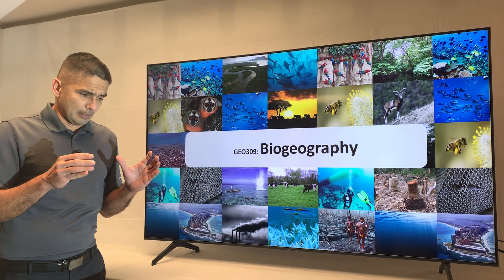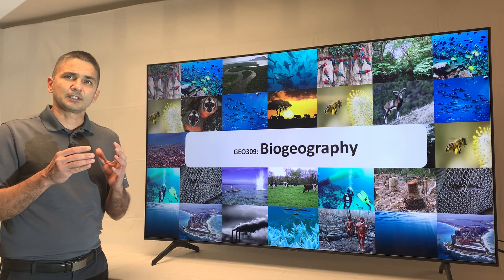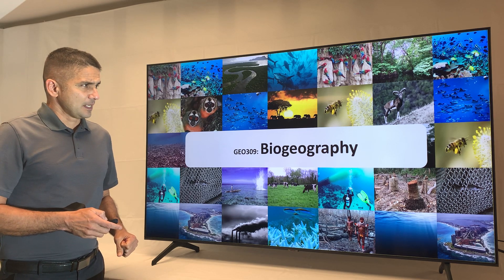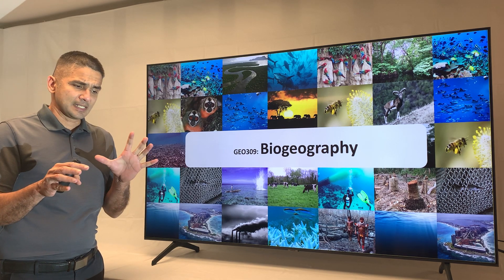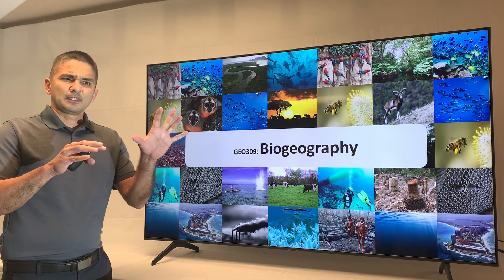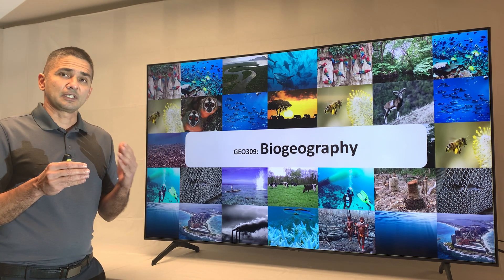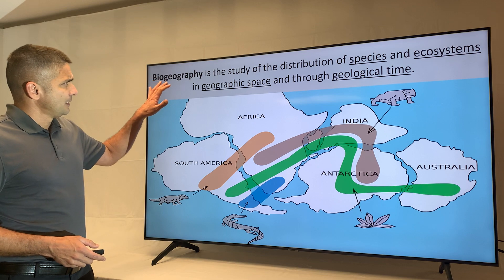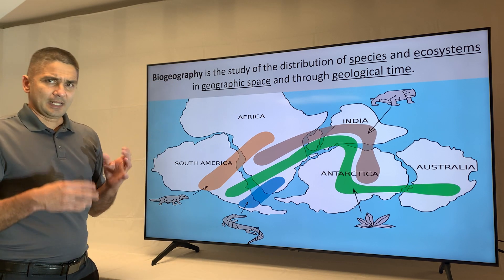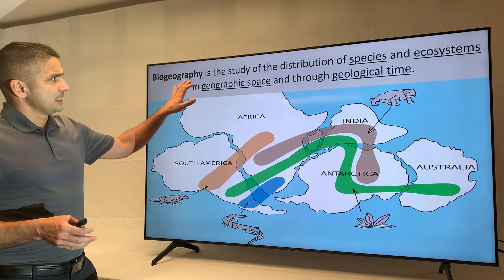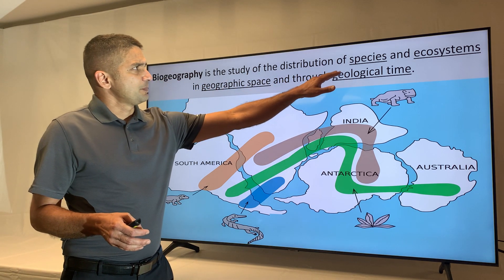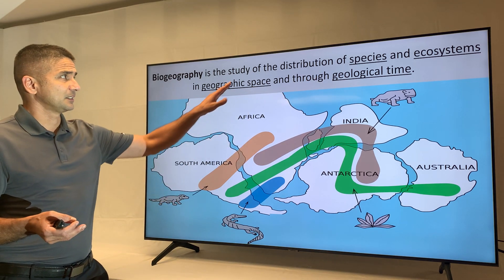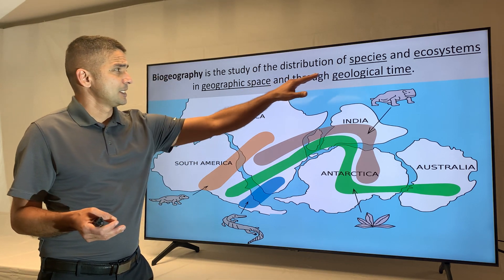I'm going to take the first few classes to introduce several terms you need to know so that later you can appreciate the content we'll be describing. So the first two classes, bear with me — we're going to be looking at different terms, probably not related to each other, but you need them before we move forward. The specific definition of biogeography that you'll find in any textbook is the study of the distribution of species and ecosystems in geographic space and through geological time — basically understanding the distribution of species in space and time.